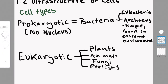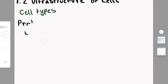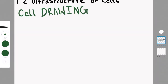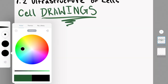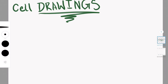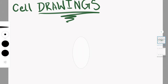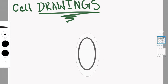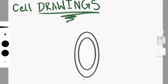For prokaryotic cells, it basically just means cells with no nucleus. It is bacteria, usually very simple, and there are two types. There's eubacteria, which is like normal bacteria, the daily bacteria.